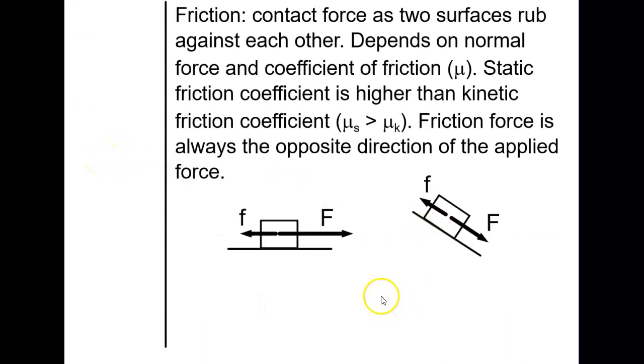Friction is a really common thing that we work with in this class. Friction is a contact force that occurs when two substances are rubbing against each other. It basically depends on the normal force on the object and the coefficient of friction which is represented with the fancy u, that's called mu, I call it the fancy u. Static friction coefficient is always higher than kinetic friction coefficient. If you think about when you're pushing an object, it takes more force to start the object moving than it does to keep the object moving. So if you're trying to push like a table across a tile floor, you have to push harder to get it started than you do to keep it moving. And that's because the static coefficient of friction is higher than the kinetic coefficient of friction. Once you get the object moving, this goes down.